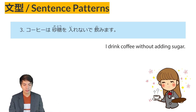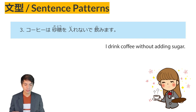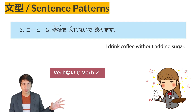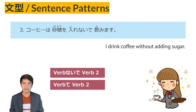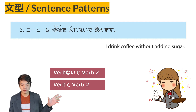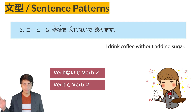Sentence Pattern No. 3 uses two sub-patterns: verb naide verb, and verb te verb. The first, verb naide, means without doing verb 1, you will do verb 2. The other, verb te verb, means you will do verb 1 together with verb 2.